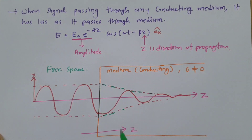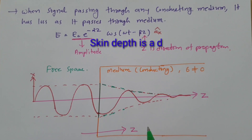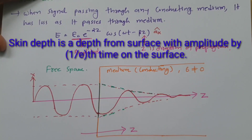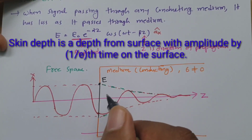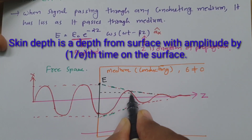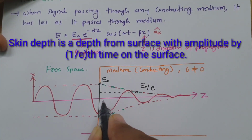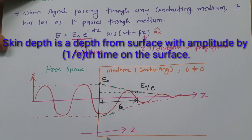Maximum strength is on the surface and it decreases as it goes inside — that is the direction of propagation. Now there are a few definitions we need to understand. One definition is skin depth. Skin depth explains the decrease in electric field to 1/e times the maximum electric field. If on the surface the electric field is E, then at a certain depth the electric field is E0, and E0/E — this depth is referred to as skin depth, denoted delta.